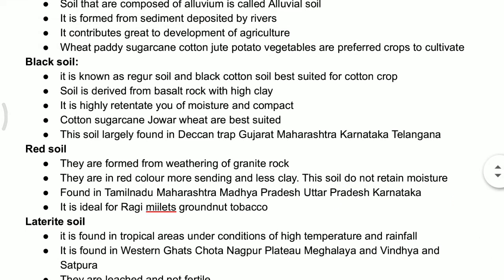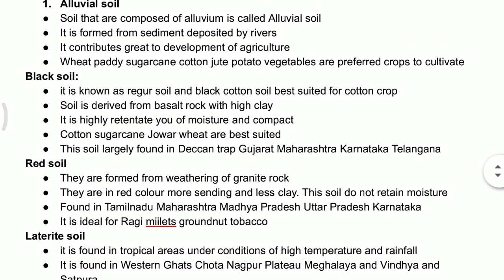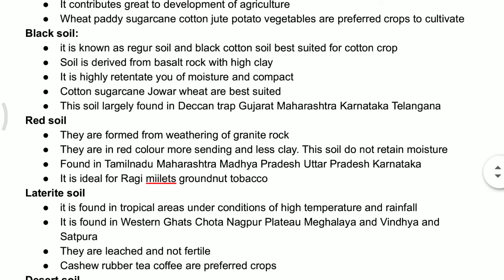Even though there is a very little amount of rainfall, we can cultivate many types of crops in black soil. This type of soil can be found in the Deccan trap, Gujarat, Maharashtra, and particularly North Karnataka, Telangana. Gujarat and Maharashtra have a very high concentration of black soil.